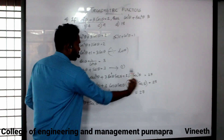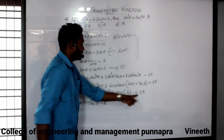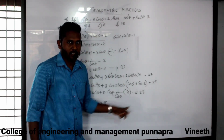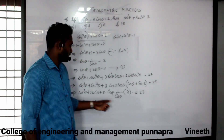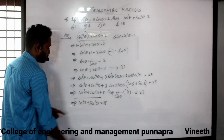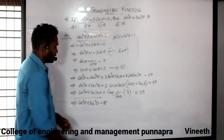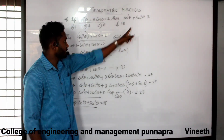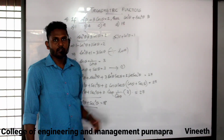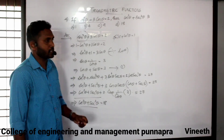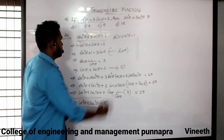So 9 — that will be 27. If you want to see the cos theta plus cot theta, it will be the answer. So the answer is 27.